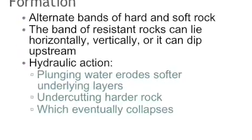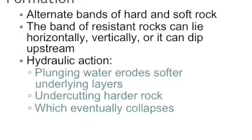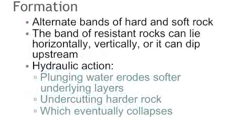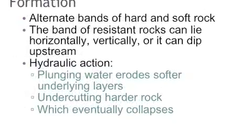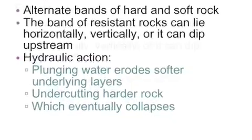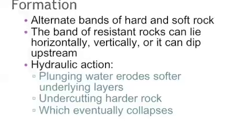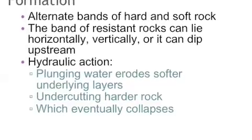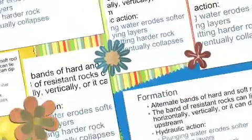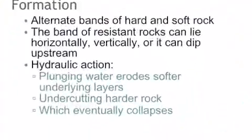Formation: by alternate bands of hard and soft rock. The band of resistant rock can lie horizontally, vertically, or it can dip upstream.